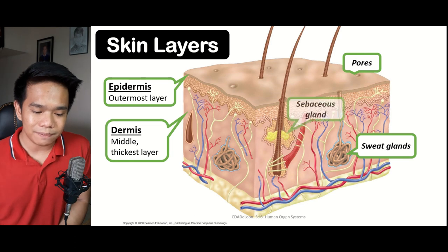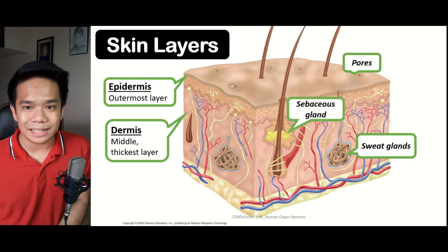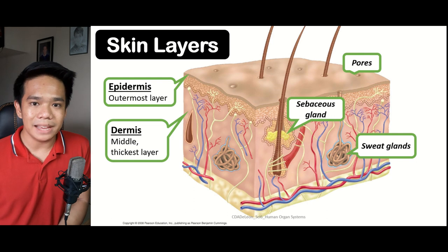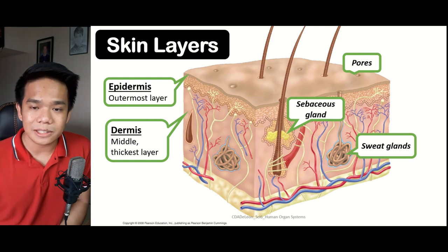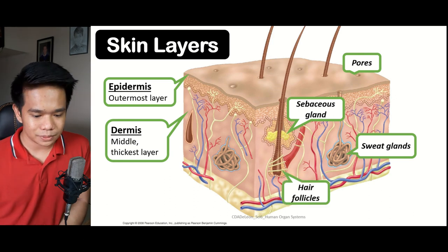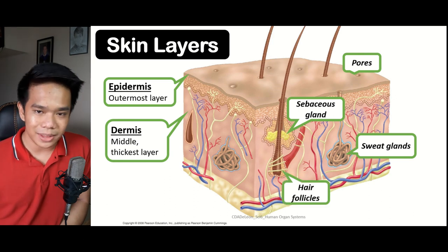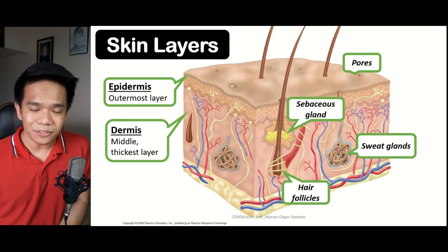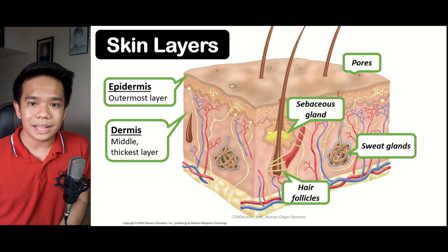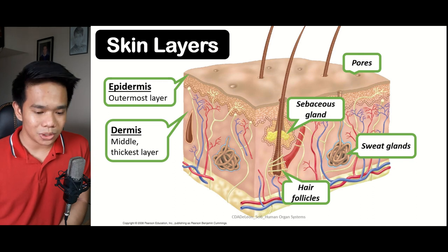We also have the sebaceous gland, or the oil gland. As the name implies, it is the one that produces oil. These oil cells serve for the lubrication of the skin in order to prevent excessive water loss. We also have the hair follicles, which serve as the root for the growth of the hair.